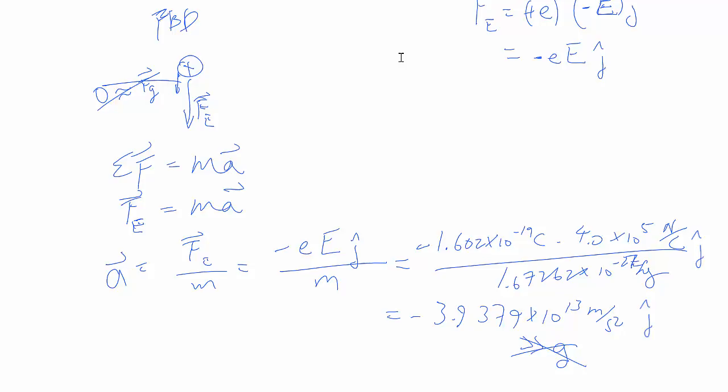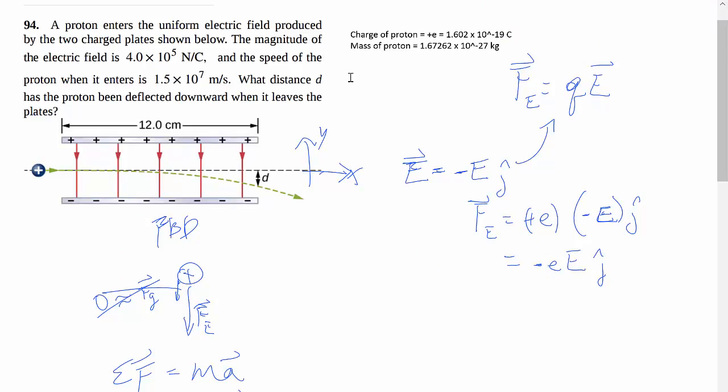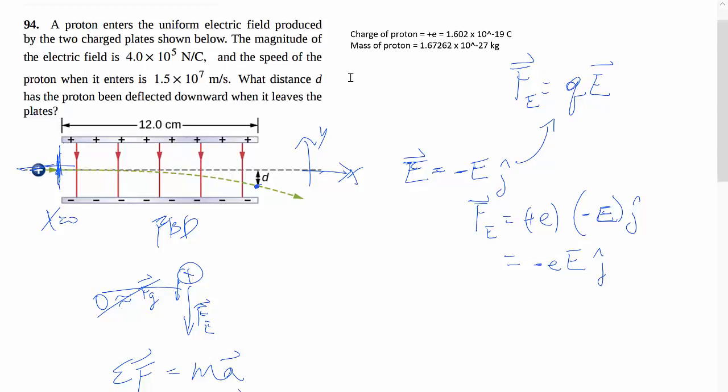Now that we have the acceleration in the j hat direction, we can do simple kinematics to find out that deflection that we want. Let's go back to the picture. Here we want to relate this initial point as it enters the plate and starts to feel the force to here at the end of the plate. And we want to find out what the y position is at that point. We'll call here as x equals 0, call this here as y equals 0, just to have some consistency.